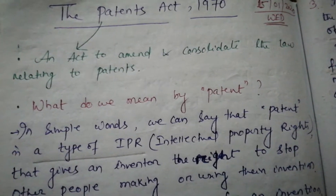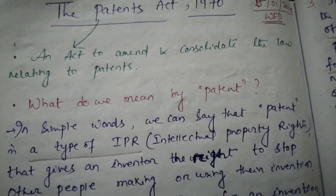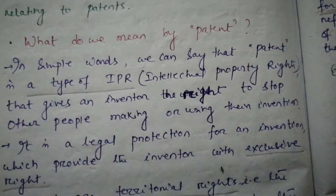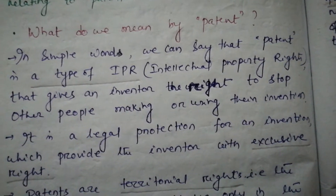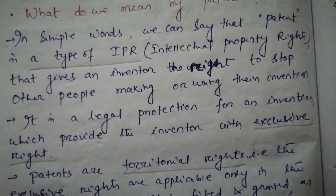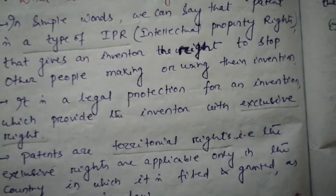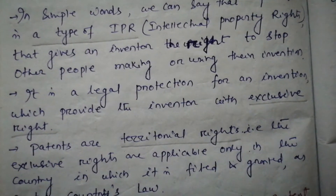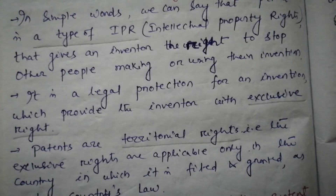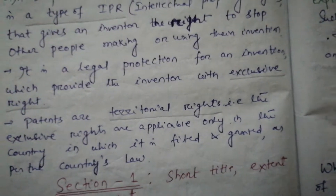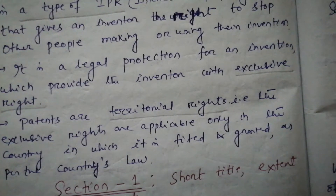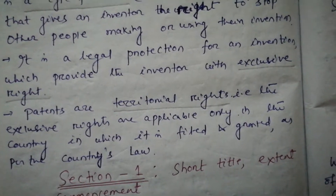So what is the Patent Act? It is an act to amend and consolidate the law relating to patents. What do we mean by a patent? In simple words, a patent is a type of IPR, or intellectual property rights, that gives an inventor the right to stop other people from making or using their invention. It is a legal protection for an invention which provides the inventor with exclusive rights. Just see the underlined words — these are the key words. Patents are territorial rights; that is, the exclusive rights are applicable only in the country in which it is filed and granted, as per the country's law.